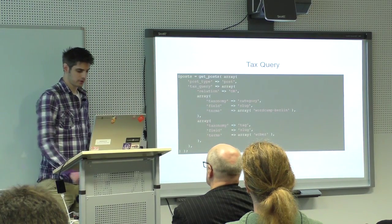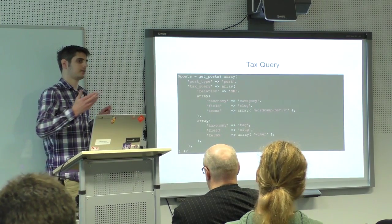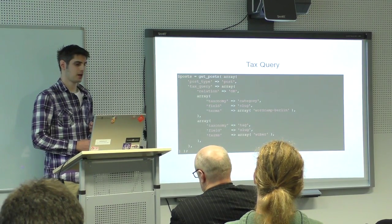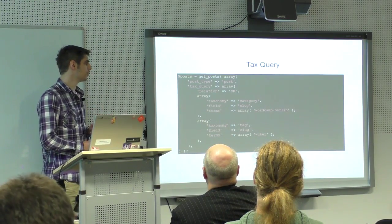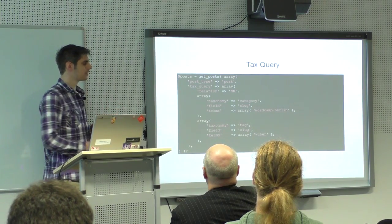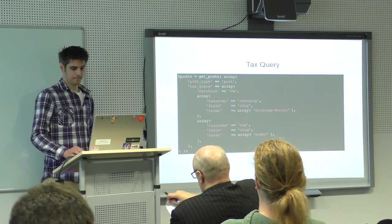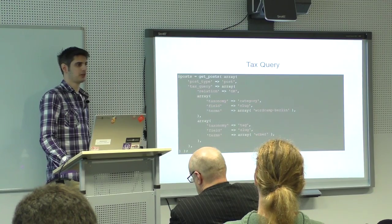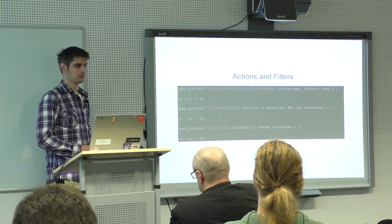Then there is the tax query. If I want to have a bunch of posts and impose some constraints about terms or taxonomies on those posts, I can say: let's fetch all posts of the standard post type, and I only want them if they either have the category WordCamp Berlin or the tag WCBER. Whatever I put into that tax query, it's internally converted to an object and then passed to the parser and processed.